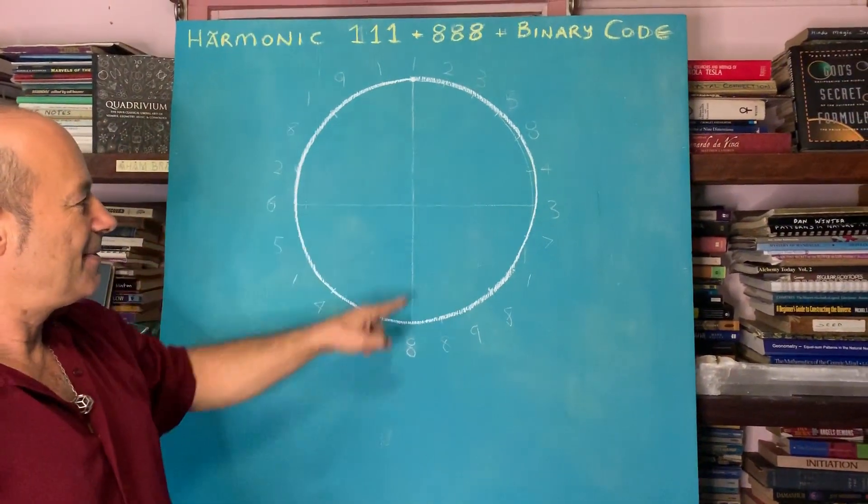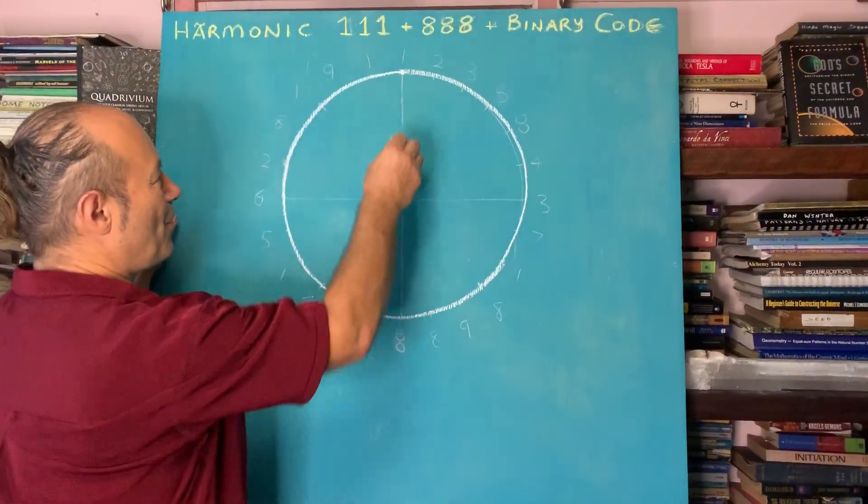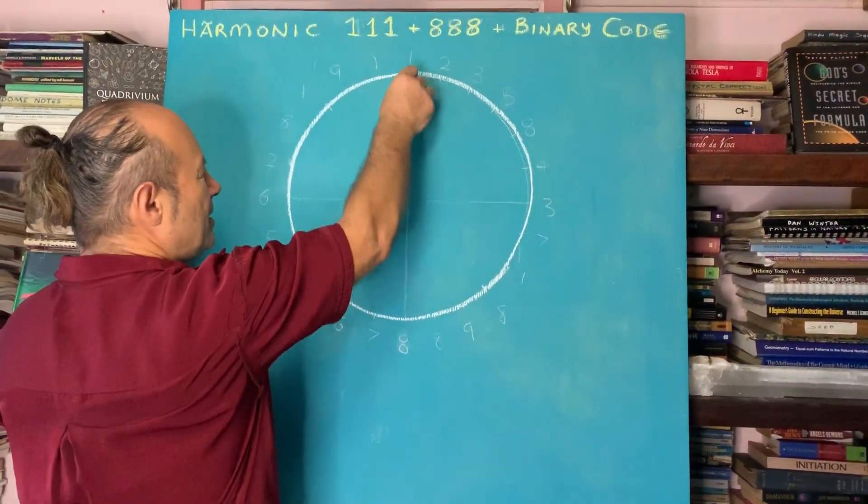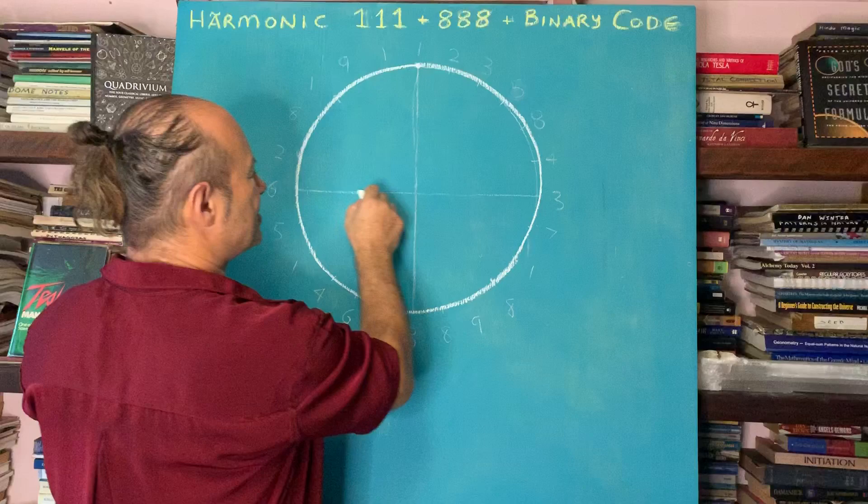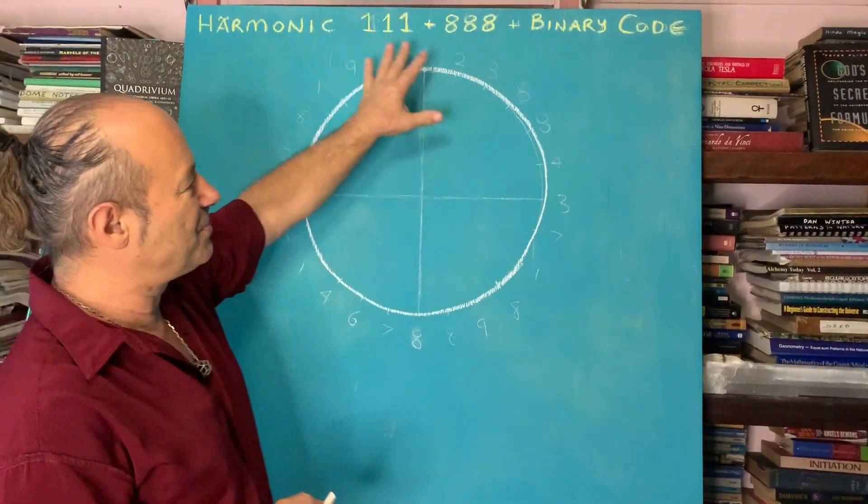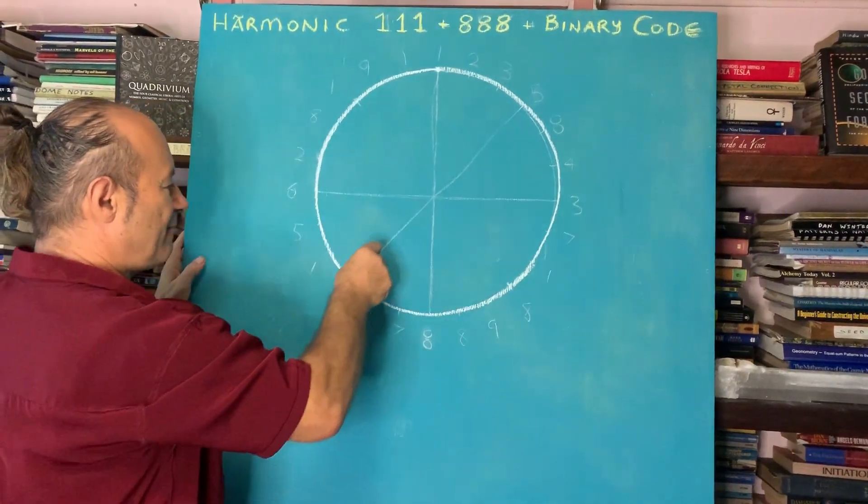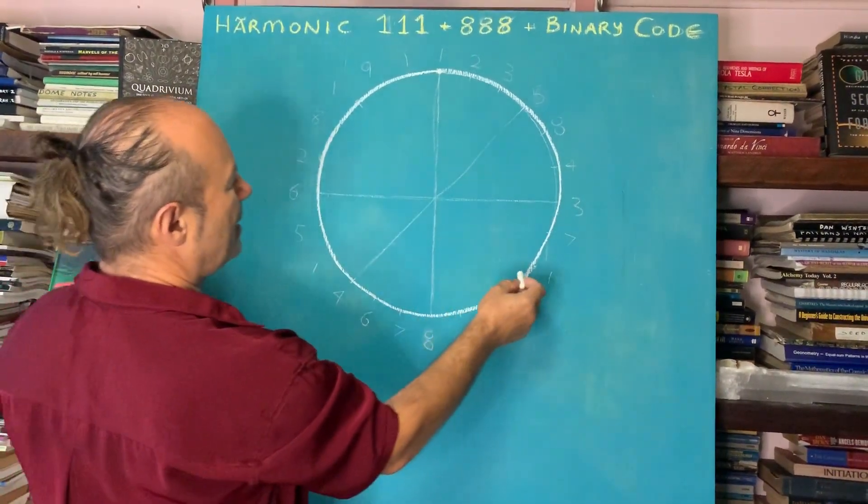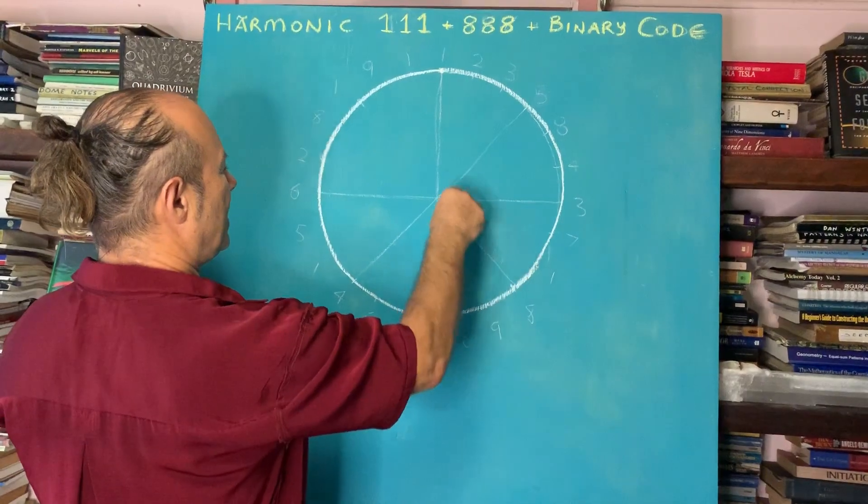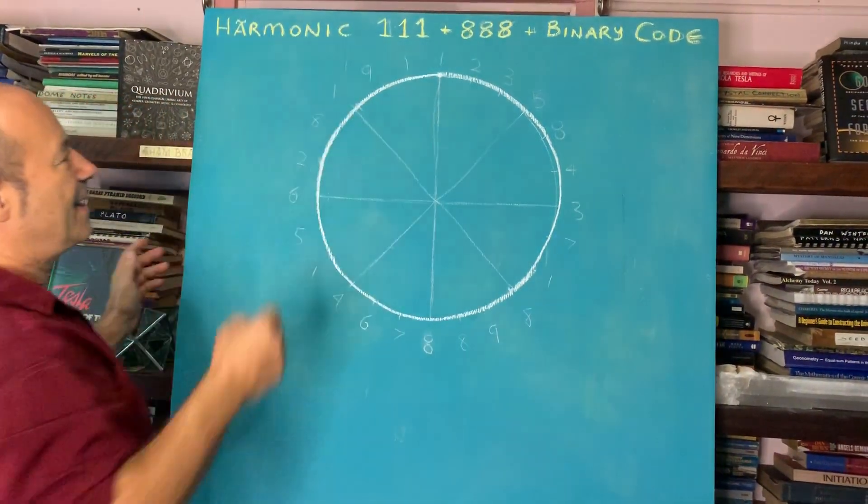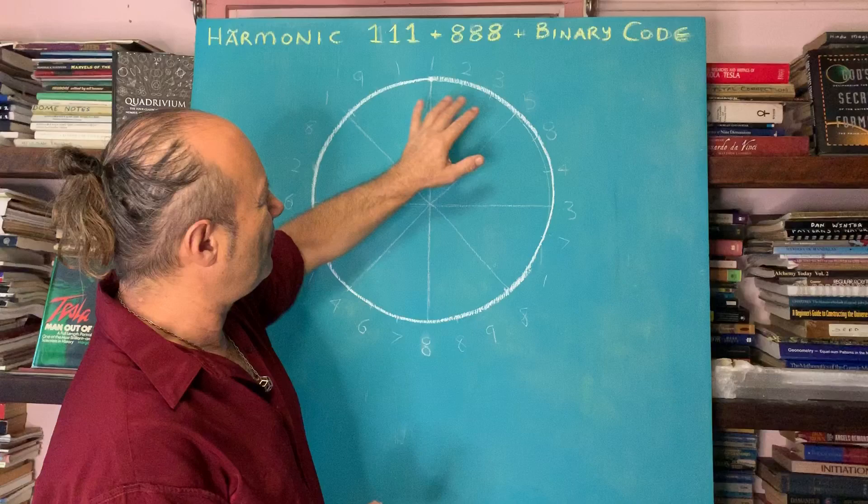I want to divide the circle into 24. We've got four quadrants, and if we divide each quadrant again, you can see we've got eight points, but we want 24.